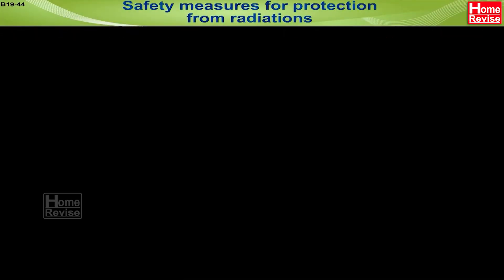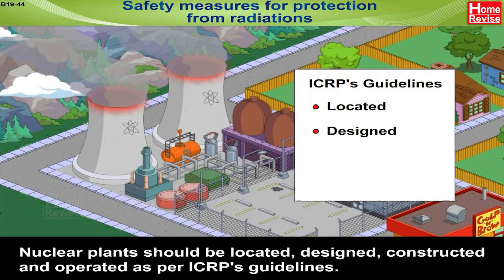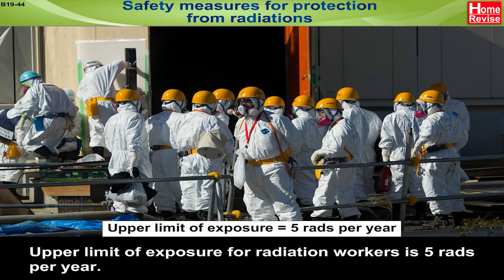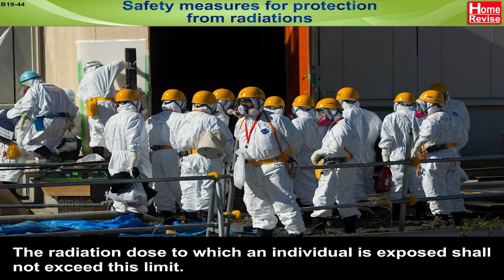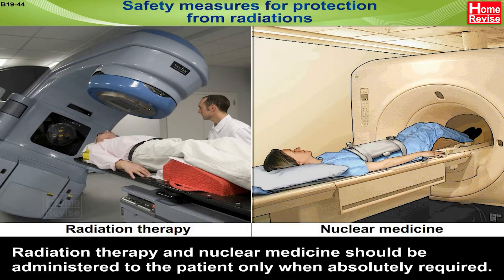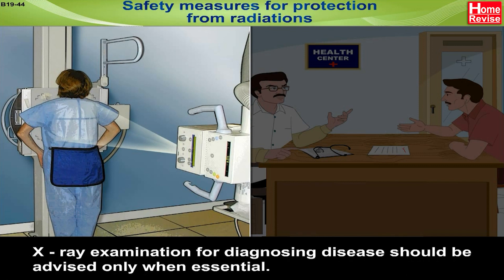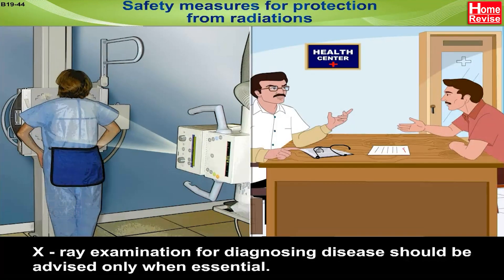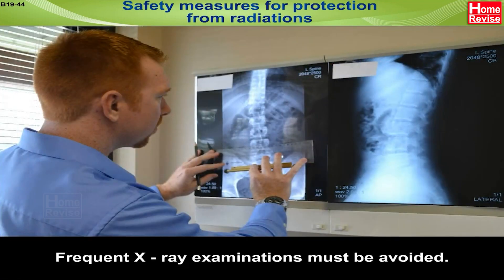Safety measures for protection from radiation — nuclear plants should be located, designed, constructed, and operated as per ICRP guidelines. The upper limit of exposure for radiation workers is 5 rads per year, and the radiation dose to which an individual is exposed shall not exceed this limit. Radiation therapy and nuclear medicine should be administered to patients only when absolutely required. X-ray examination for diagnosing disease should be advised only when essential, and frequent X-ray examinations must be avoided.